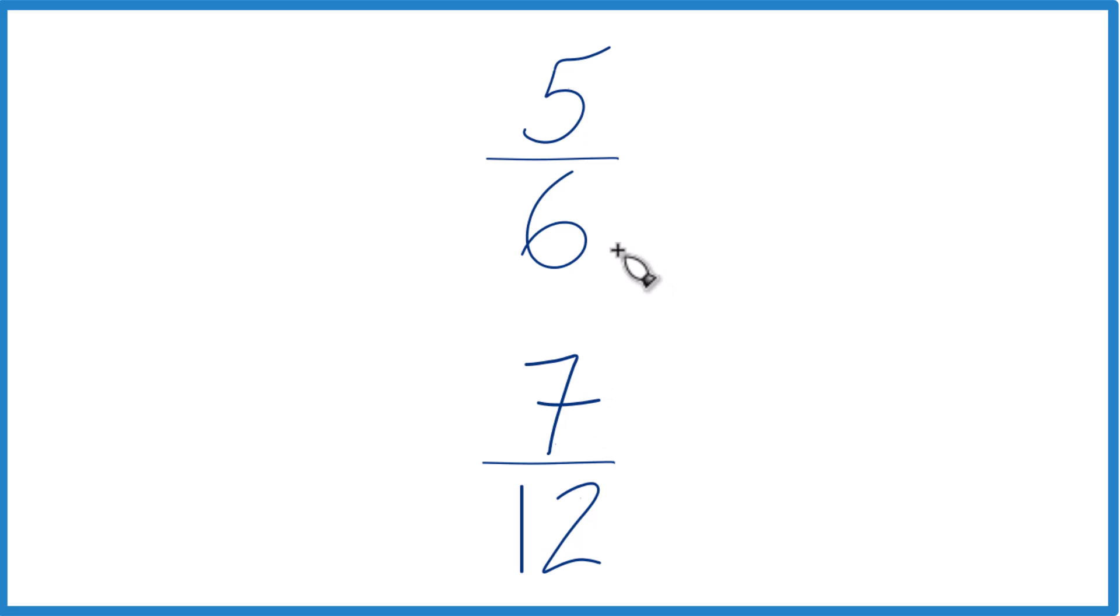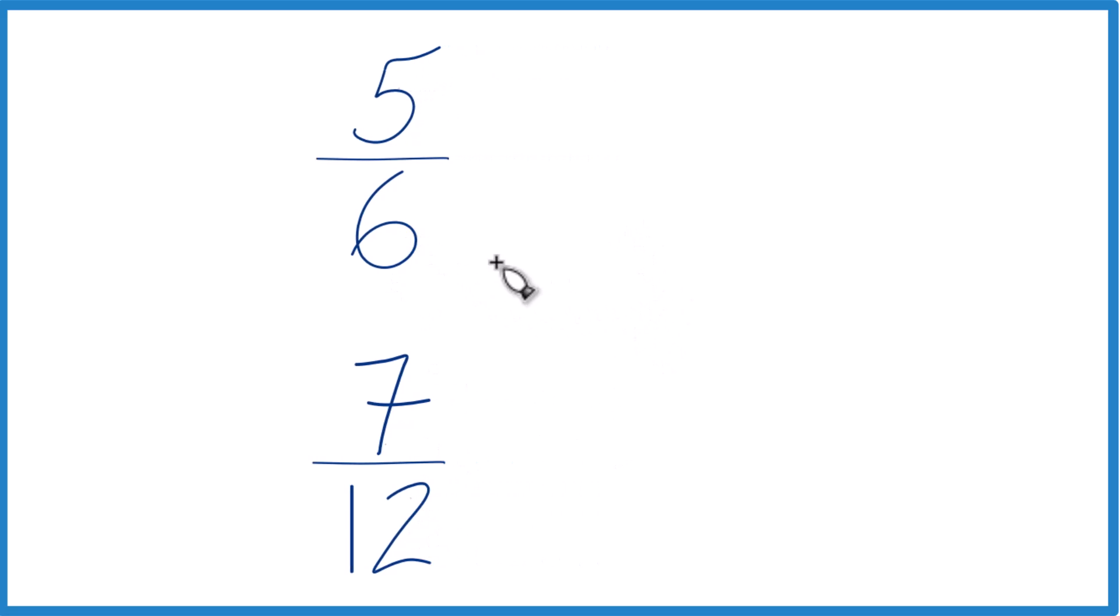The other way to do it is find a common denominator. So we have 6 and 12. If we multiply 6 times 2, that'll give us 12. And then down here, we already have 12. We'll just keep this as 7/12.